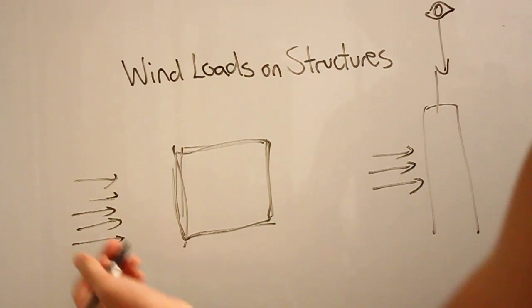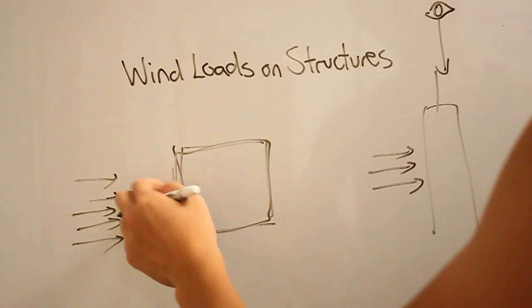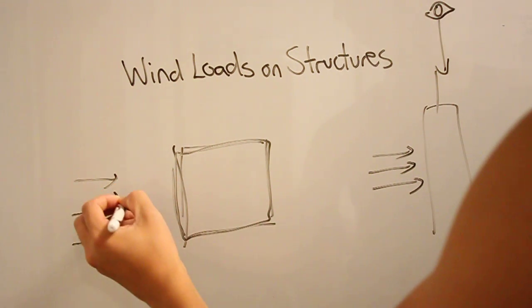So obviously it can't go through the wall, so wind forces coming right at the wall will have to go around the building, so we can kind of draw it like this.